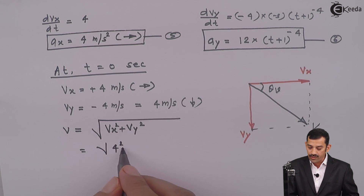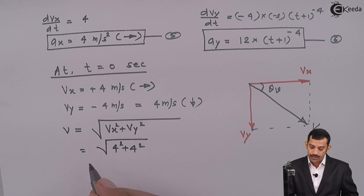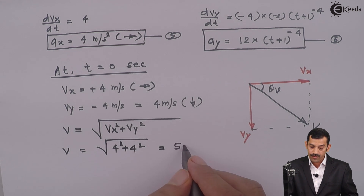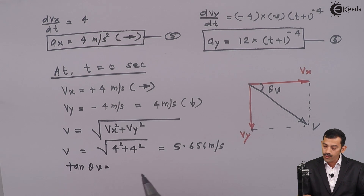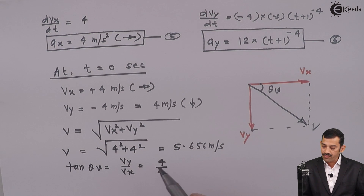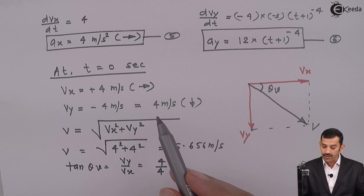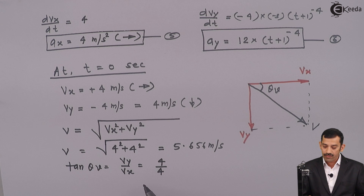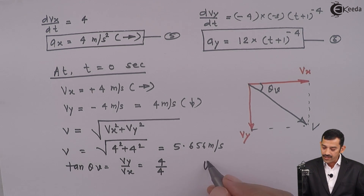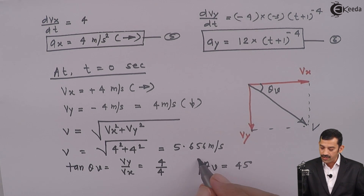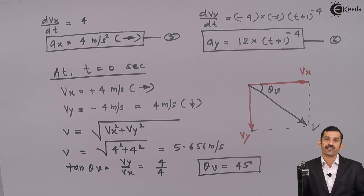Applying Pythagoras theorem, the resultant velocity is the square root of vx squared plus vy squared, which is square root of 4 squared plus 4 squared, giving root of 32. The resultant velocity at t equal to 0 second comes out to be 5.656 meters per second. The angle theta v is tan inverse of vy upon vx, which is tan inverse of 4 over 4, giving theta v equal to 45 degrees.